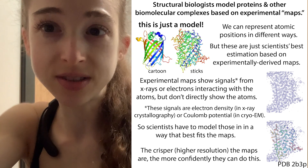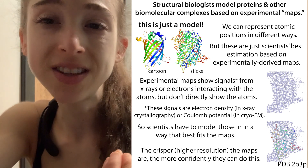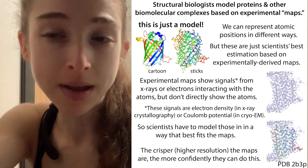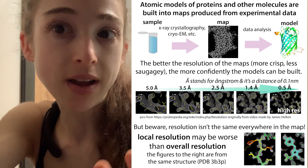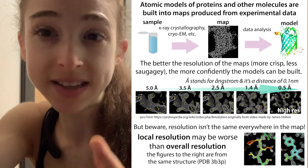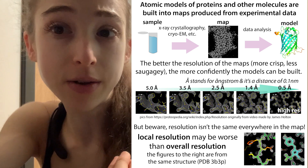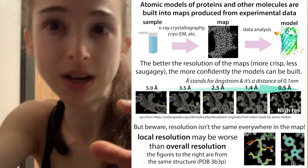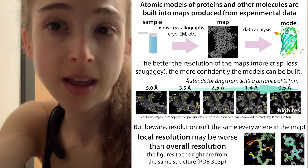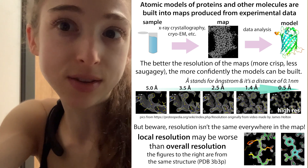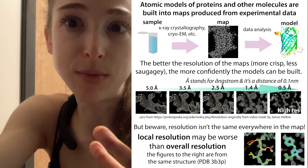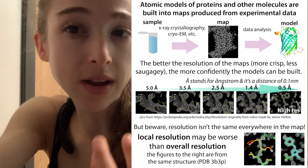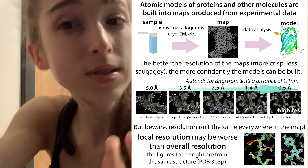When you see one of those pretty cartoon pictures of a protein, that's actually an atomic model based off of a map. Structural biology uses techniques like crystallography and cryo-EM that generate these maps, which show the approximate location of different atoms based on evidence those atoms give off when you shoot them with X-rays or electrons. It's then the job of the structural biologist to build a model into that map.